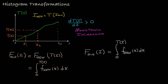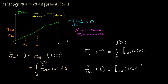So that's one relationship. Recall that the derivative of the cumulative frequency distribution is the normalized histogram. So if we differentiate both sides of this equation, we find that the normalized histogram evaluated at some intensity i is equal to the new normalized histogram evaluated at the transformed intensity T(i).